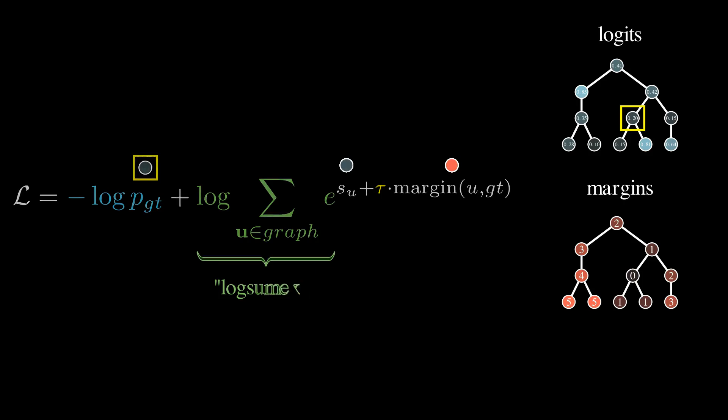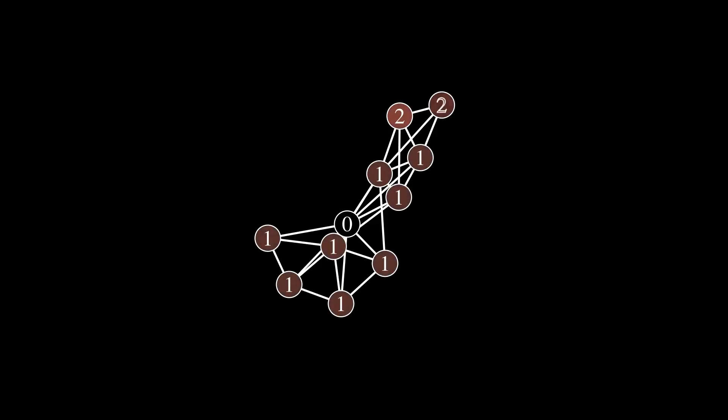A cool property of this particular loss is that unlike the first two, it does not imply that the labels are structured as a tree. They can have different relations entirely, and we will still be able to enforce the structure in the loss if we can define a meaningful cost function.